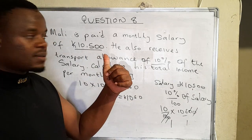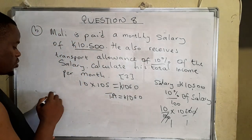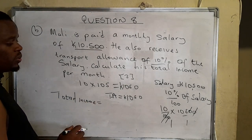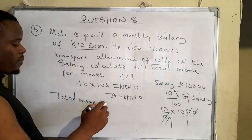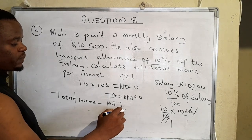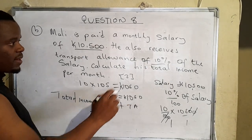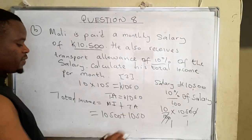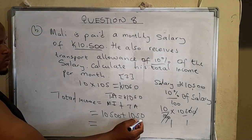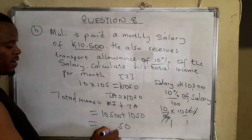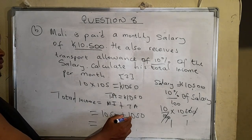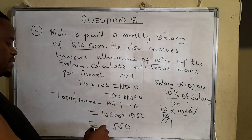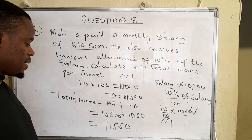The total income will be the transport allowance plus the monthly salary. So total income equals monthly salary plus transport allowance: ten thousand five hundred plus one thousand and fifty. Starting from the right — zero plus zero is zero, five plus zero is five, five plus zero is five, then one plus zero is one, giving us eleven in the thousands column.